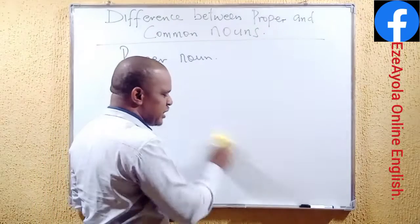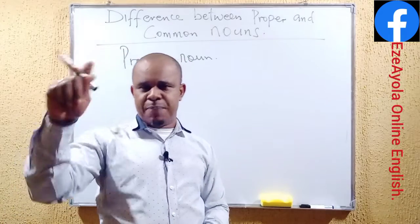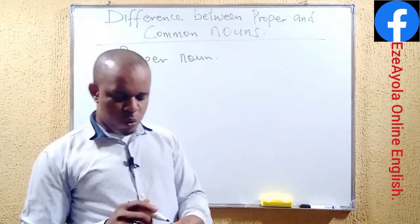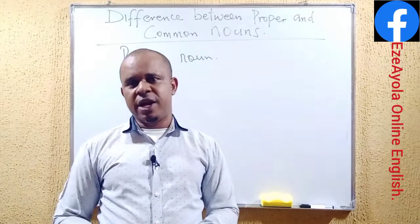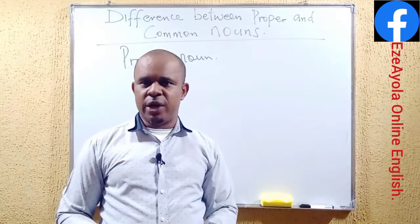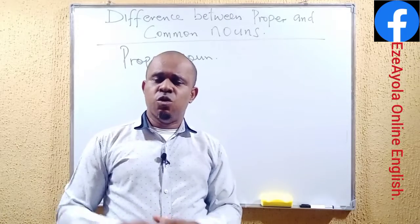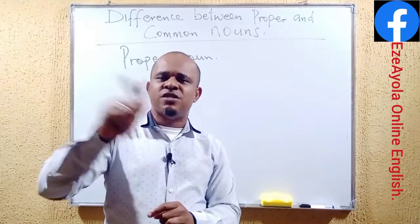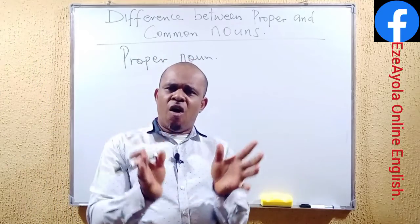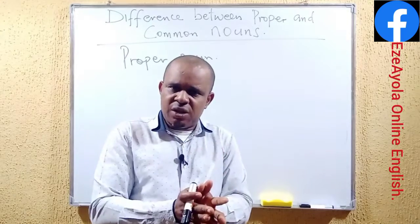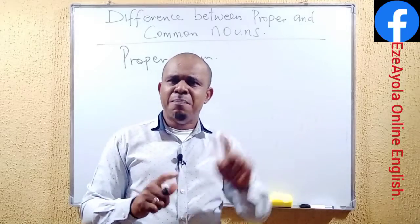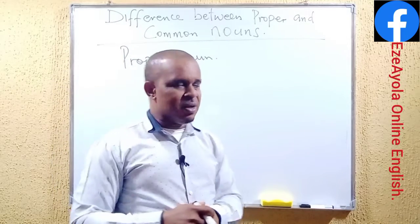From our definition, we said it is the name given to a particular person, particular place, particular thing. For instance, when we talk about Lagos — Lagos State is in Nigeria. Lagos is the name given to a particular state. In Nigeria, we have up to 36 different states, so Lagos is just one of them. The name Lagos State is the name given to a particular state existing in the entire nation, Nigeria. That name makes the state a particular place.